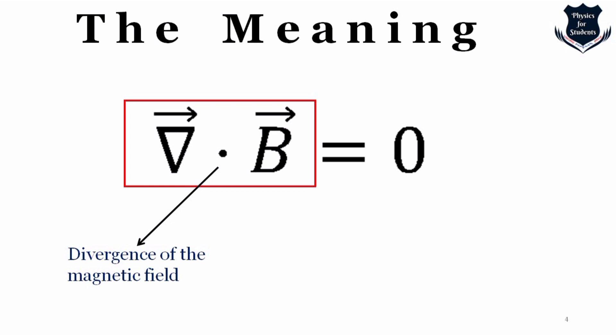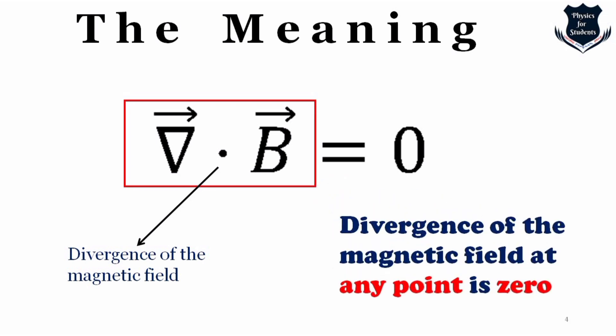One way to understand why this is true is by analogy with the electric field, for which the divergence at any location is proportional to the electric charge density at that location. It is not possible to isolate magnetic poles — if you cut a bar magnet, it will still have a north and south pole. Therefore, the magnetic charge density must be zero everywhere, which means the divergence of the magnetic field at any point is zero. This equation proclaims that magnetic monopoles are not possible.